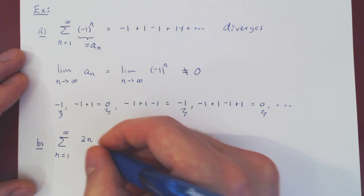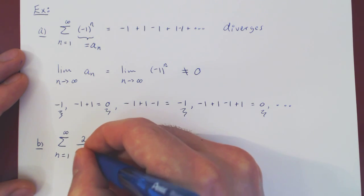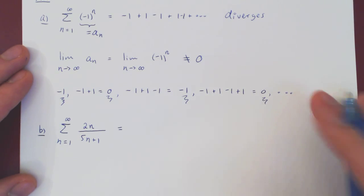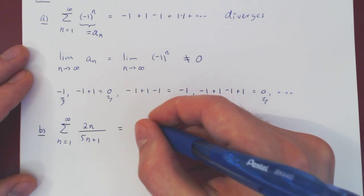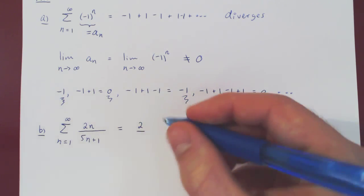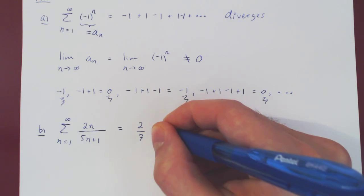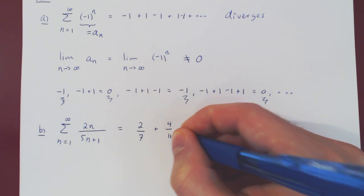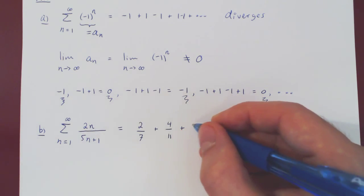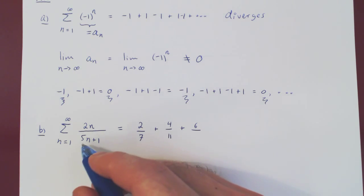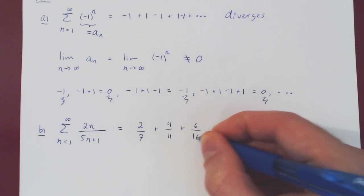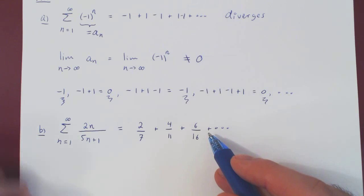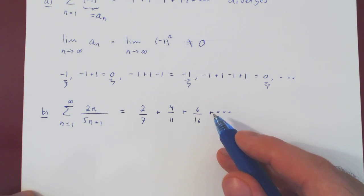Let's look at one other example. If we're trying to sum 2n over 5n plus 1, we can write out the first few terms. When n is 1, we have 2 over 7. When n is 2, we have 4 over 11. When n is 3, we have 6 over 16, and so forth. So here's our series with its first three terms, and we're asking: does this series converge or diverge?